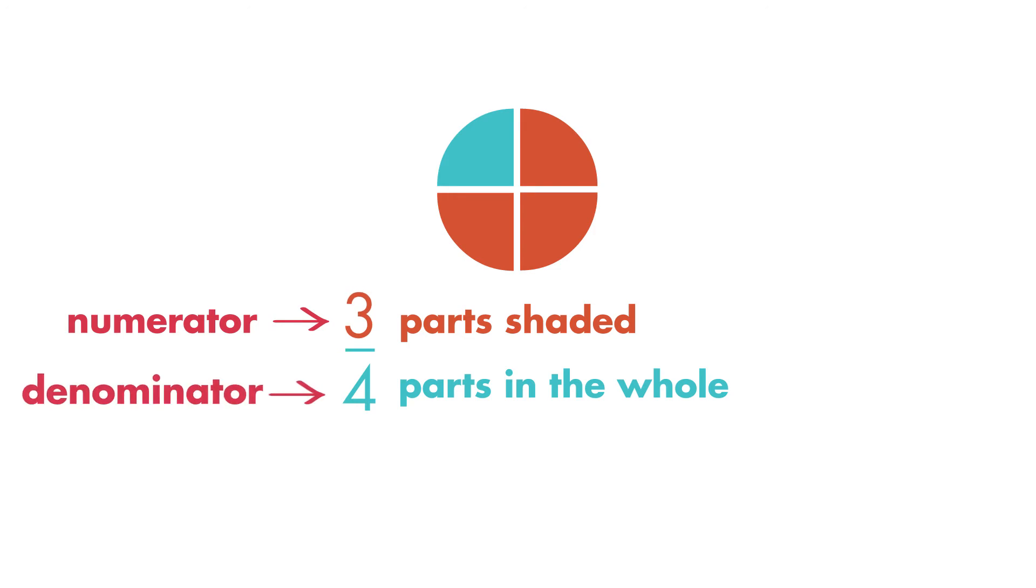The denominator is the bottom number of a fraction. The denominator tells the total number of parts in the whole. This denominator is four.